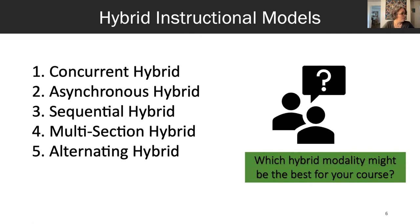And number five, alternating hybrid: all students are required to attend some on-campus instruction, but attend in smaller groups to comply with health guidelines. When not on-campus, students engage in learning activities online.